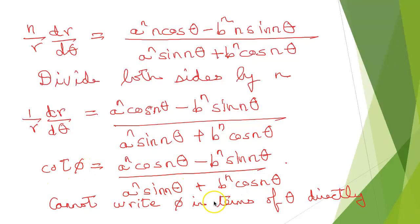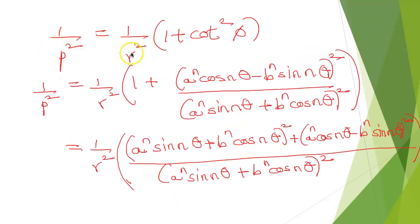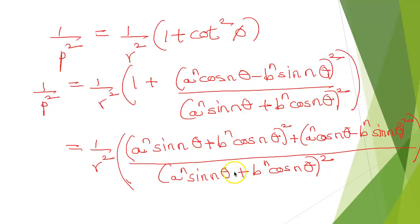Here we cannot write φ directly in terms of θ, so we write 1/p² = (1/r²)(1 + cot²φ) and substitute for cot φ. So 1/p² = (1/r²) · [1 + (aⁿ cos(nθ) − bⁿ sin(nθ))² / (aⁿ sin(nθ) + bⁿ cos(nθ))²]. Taking the LCM, we get (1/r²) times [(aⁿ sin(nθ) + bⁿ cos(nθ))² + (aⁿ cos(nθ) − bⁿ sin(nθ))²] all divided by (aⁿ sin(nθ) + bⁿ cos(nθ))².